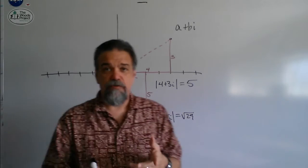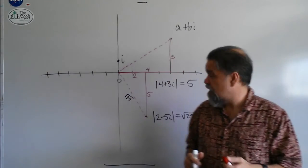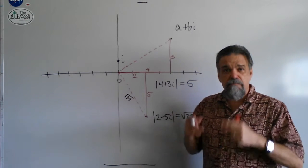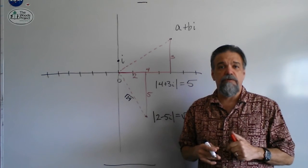So, again, absolute value still ends up being a positive number, always. Absolute value is always a positive number, because it's a distance, and distances are only positive.